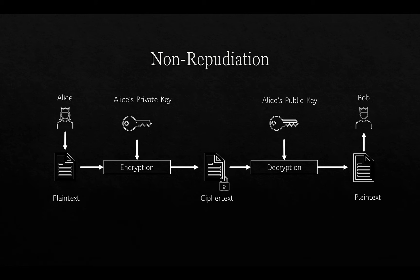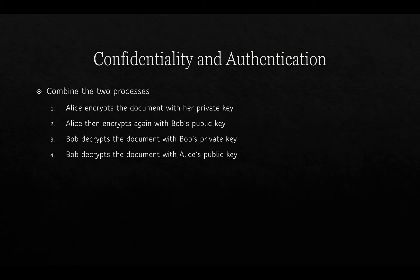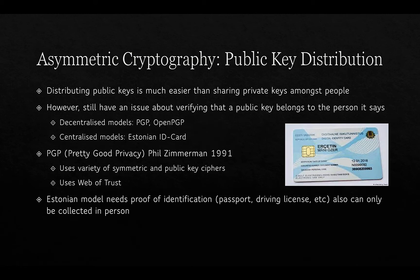To achieve both confidentiality and authentication, we can combine these two processes. Alice encrypts the document with her private key and then encrypts again with Bob's public key. Bob decrypts the document with his own private key and then decrypts with Alice's public key. This way it's protected in transit to Bob and we're also proving that it was Alice who sent it.